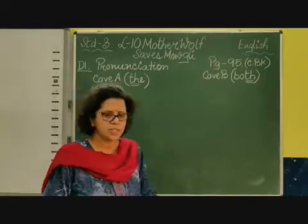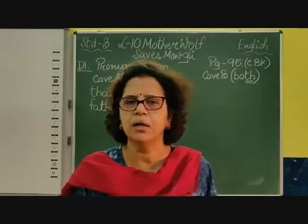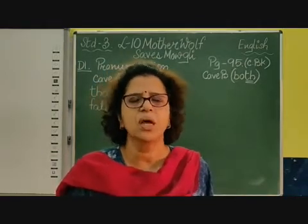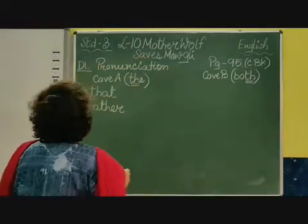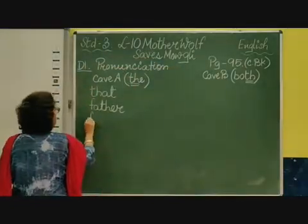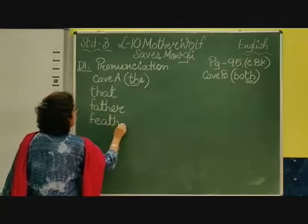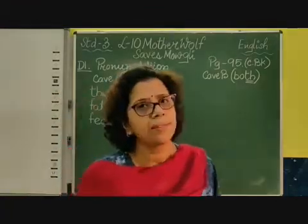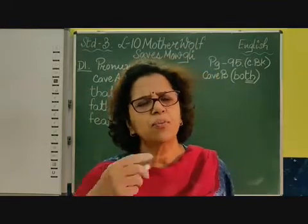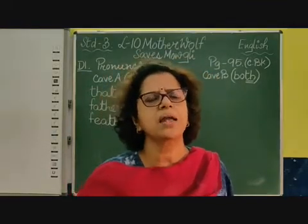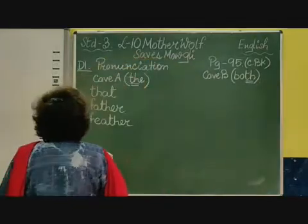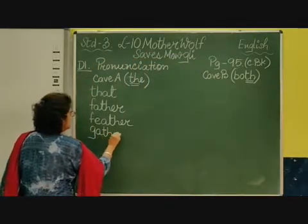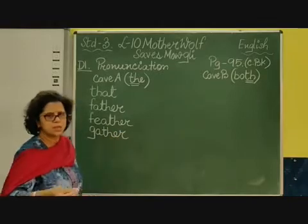Children, the next word is 'feather'. We don't say 'feather' with a hard TH — that is not correct. It is unvoiced: 'feather'. So feather will come in cave A as well. Coming to the next word, 'gather'. You pronounce the word and you will immediately understand — it is the unvoiced one. 'Gather.' It is not 'gather' with a hard TH. Don't say that. Once you say it, you can understand: 'gather.'